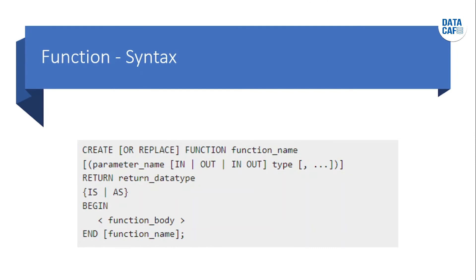Now we'll see the syntax of functions. The function name specifies the name of the function; the 'or replace' option allows modification of an existing function. The optional parameter list contains names, modes, and types of the parameters. 'IN' represents the value passed from outside, and 'OUT' represents the parameter used to return a value outside of the procedure or function. The function must contain a return statement — that is mandatory. The return clause specifies the data type you are going to return from the function. The function body contains the executable part, and the 'AS' keyword is used instead of 'IS' for creating a standard function.